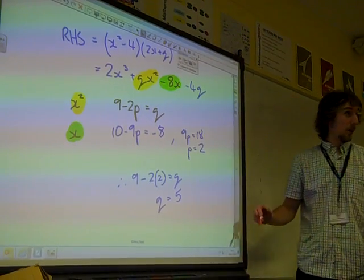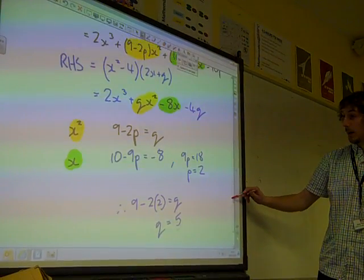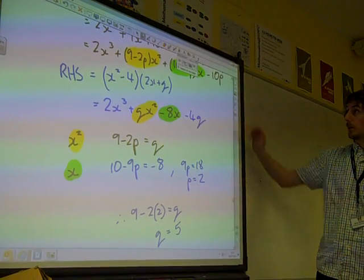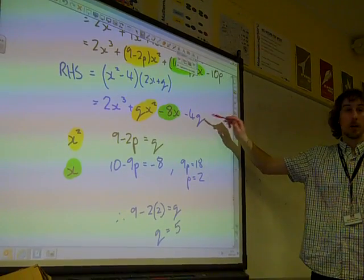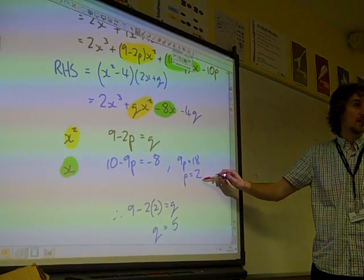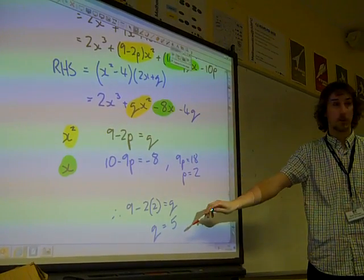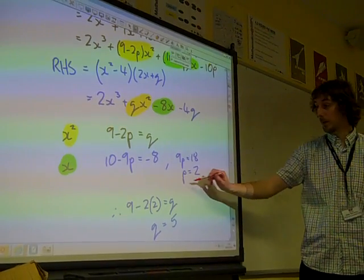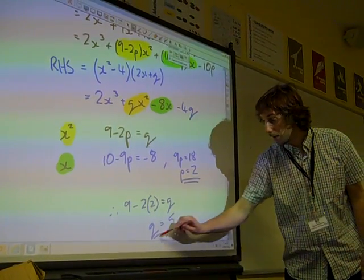And let's do that check just to make sure this is working out OK. We should have that minus 10p is the same as minus 4 times q. Minus 10p is negative 20. Minus 4 times 5 is also negative 20. So I think we're happy with these values of p and q.